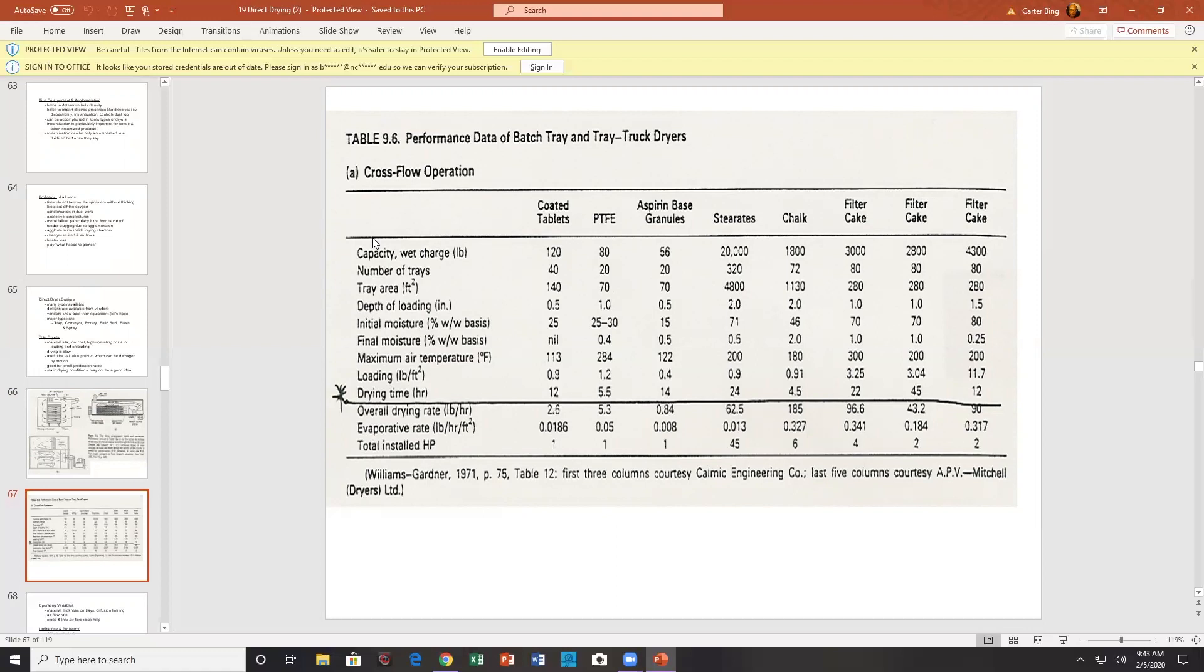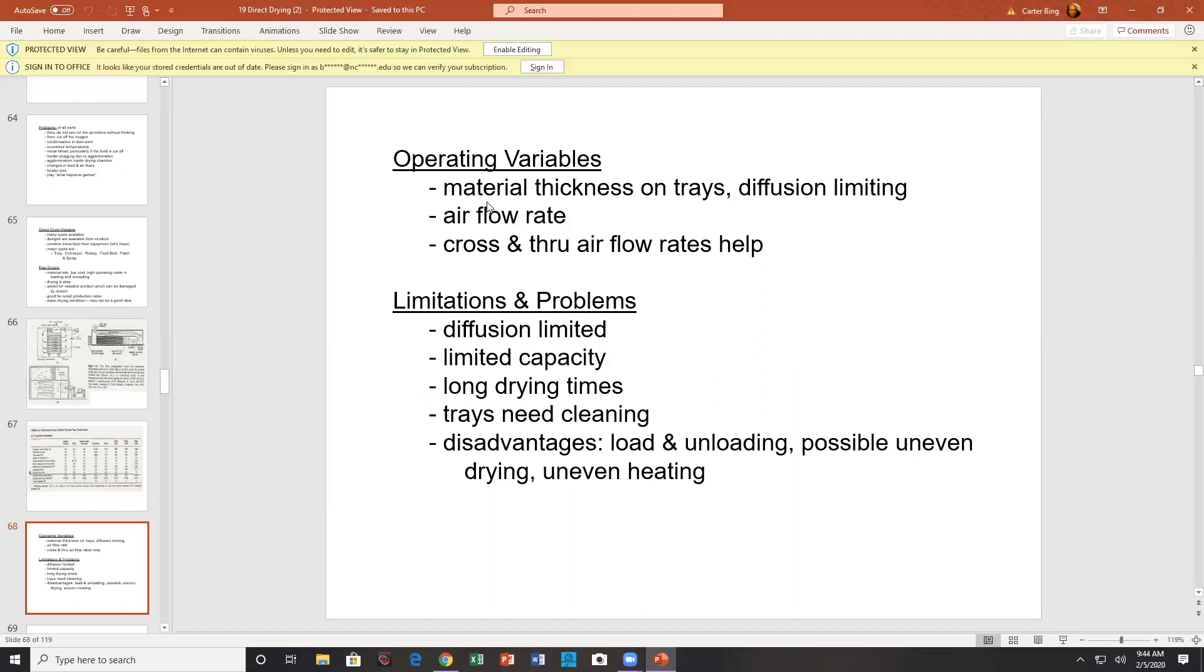The operation rate's pretty low. So these are very interesting data. This is essentially a performance data. And this is why you want to use Wallace's book because they got all sorts of performance data. In this case, this is varying according to product. Since the tray dryer is fixed, you get some idea of their performance. Material thickness on trays makes it diffusional limiting, the airflow rate well. You want cross flow at least. You want flow through if you can do it. Diffusion limited, limit capacity, long drying times. Trays need cleaning, unloading, loading, even possible.